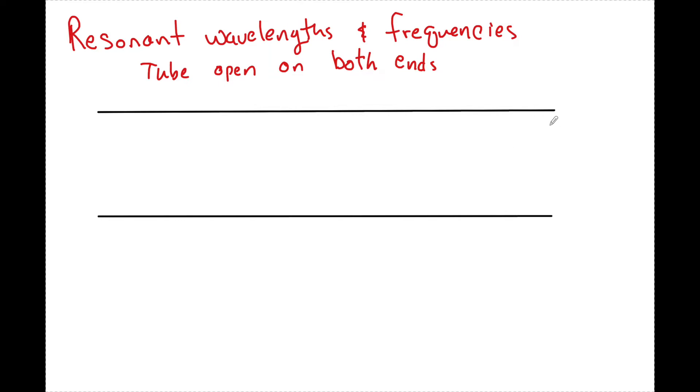It's a very big detail if there is a closed end on a tube or if there are two open ends when it comes to these resonant wavelengths and frequencies and the formulas that we're going to derive to solve for things like length, wavelength, speed, frequency, etc.